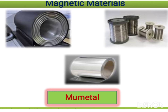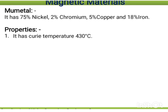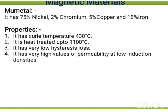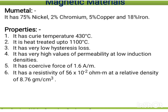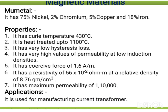Momental contains 75 percent nickel, 2 percent chromium, 5 percent copper, and 18 percent iron. Properties: Curie temperature is 430 degrees Celsius — above this temperature it loses its magnetism and becomes an ordinary paramagnetic substance; it can be treated up to 1100 degrees Celsius; it has very low hysteresis losses; very high permeability at low induction intensity; coercive force of 1.6 Oersted; resistivity of 56×10⁻² ohm-meter; relative density of 8.76 g/cm³; maximum permeability of 110,000. Application: used for manufacturing current transformers.